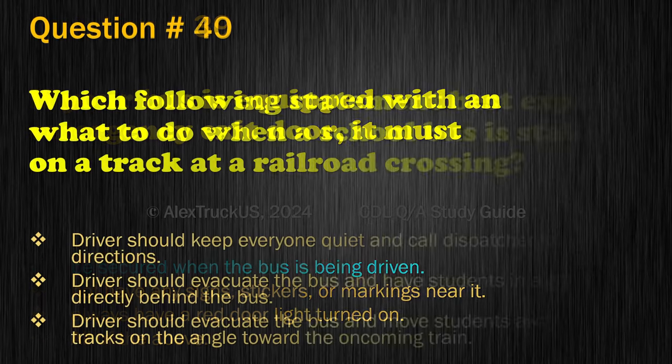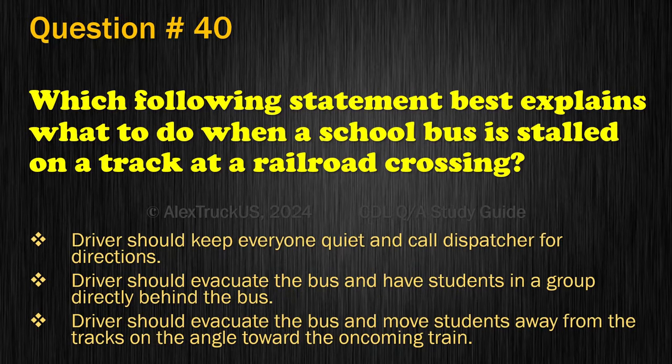Question 40. Which statement best explains what to do when a school bus is stalled on a track at a railroad crossing? Driver should keep everyone quiet and call dispatcher for directions; Driver should evacuate the bus and have students in a group directly behind the bus; or Driver should evacuate the bus and move students away from the tracks on the angle toward the oncoming train.